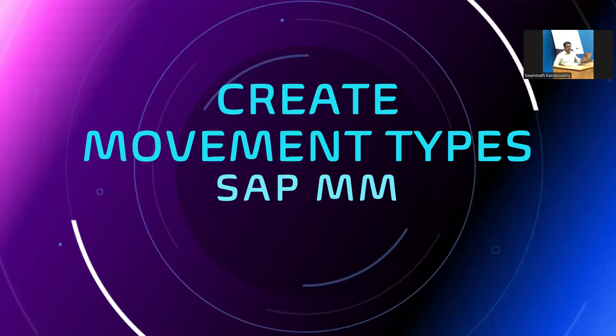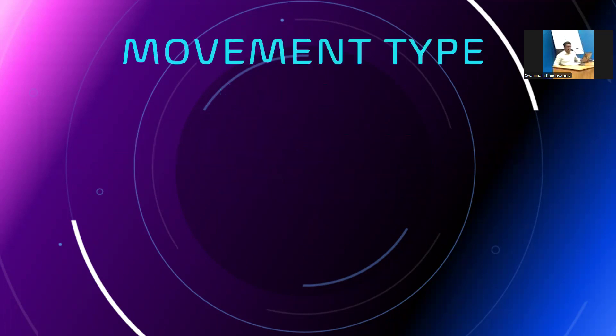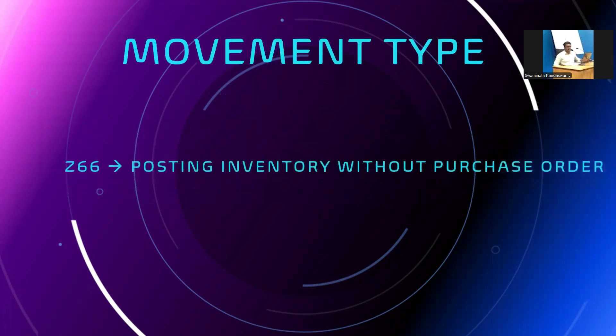Hello everybody, today we are going to see how to create movement types in SAP MM. We are going to create a movement type — we have got a support ticket for creation of the movement types. For the movement type, I'm going to create Z66, posting inventory without purchase order. We have got a change request for this movement type.